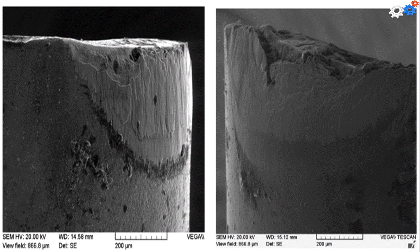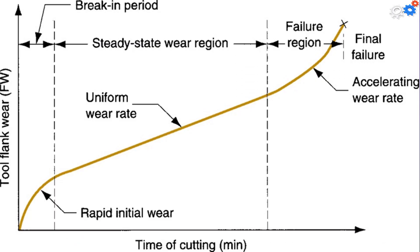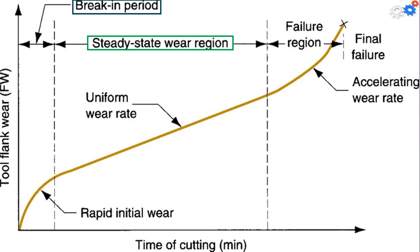Although the relationship shown is for flank wear, a similar relationship occurs for crater wear. Three regions can usually be identified in the typical wear growth curve. The first is the break-in period, in which the sharp cutting edge wears rapidly at the beginning of its use. This first region occurs within the first few minutes of the cutting operation. The break-in period is followed by wear that occurs at a fairly uniform rate, called the steady-state wear region, pictured as a linear function of time, although there are deviations from the straight line in actual machining.